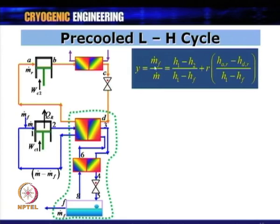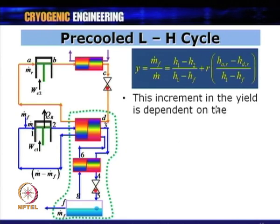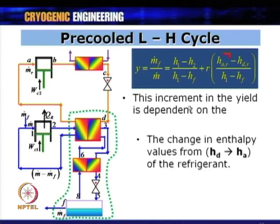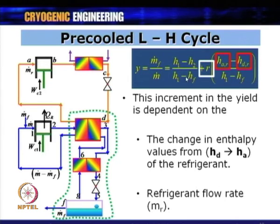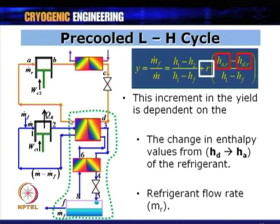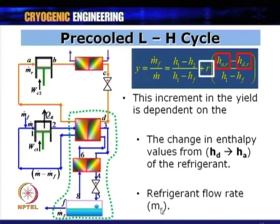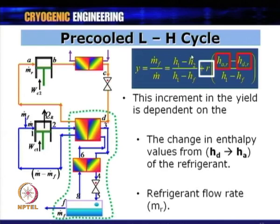If r is large and the enthalpy difference h_D − h_A is large, there will be a greater increment in y compared to the simple Linde-Hampson cycle. Since the three-fluid heat exchanger is assumed 100 percent effective, the minimum value of T3 equals Td (the boiling point of the refrigerant), and the maximum value of T6 also equals Td.